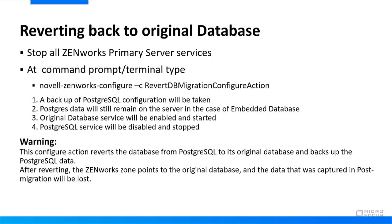To revert back to the original database: stop all Zenworks primary services, then at the terminal type 'novell-zenworks-configure -c RevertDBMigrationConfigureAction.' A backup of the PostgreSQL configuration will be taken; PostgreSQL data remains on the server. The original database service will be enabled and started, and the PostgreSQL service disabled and stopped.